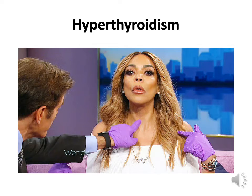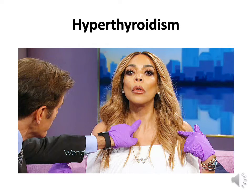In hyperthyroidism, you're going to see elevated T3 and T4 because the thyroid is producing too much. Because of that, the pituitary gland is not going to secrete TSH, so TSH will be low. So T3 and T4 high, TSH low — that is hyperthyroidism.